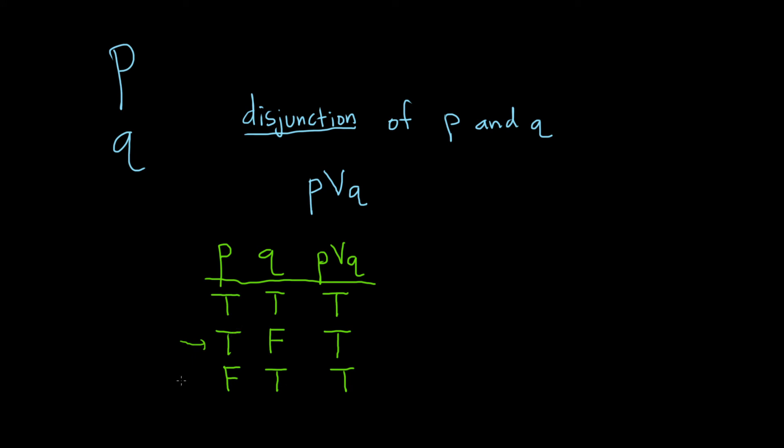The p is true. In this case here, you have the q is true. And in the first case, you have both are true. So as long as one or the other or both are true, then p or q is true. It's a nice way to think about it.